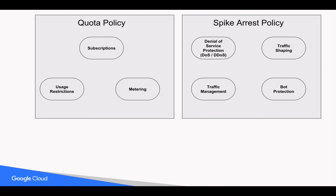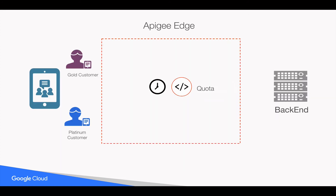Now that we know how to pick the right policy for a particular use case, let's see an example where you might need to use both policies at the same time. I have two customers: a Gold customer and a Platinum customer. A Gold customer can access 1,000 transactions per month and a Platinum customer can access 2,000 transactions per month. I can easily implement this using a Quota policy.